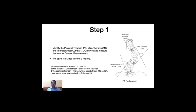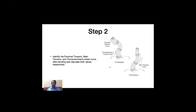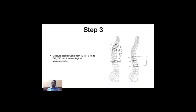The first step is to identify and measure curve magnitudes. The proximal thoracic curve has its apex between T3, T4, and T5 vertebrae. The main thoracic curve has its apex between T6 to the T11-T12 disc space. The thoracolumbar curve has its apex between the T12 superior end plate and L1 inferior end plate. The lumbar curve has its apex anywhere from the L1-L2 disc to the inferior end plate of L4. We then measure the same curves on bending profile.